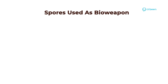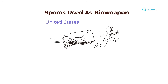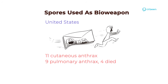As mentioned before, spores can be used as a bioweapon. In the US after 9/11, a number of envelopes with anthrax spores were sent. These acts of terrorism caused 11 cases of cutaneous anthrax, 9 cases of pulmonary anthrax before deaths, and 2 cases of inhalational anthrax, both of which did not survive.